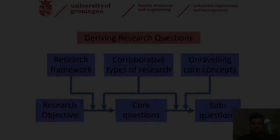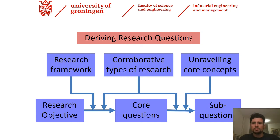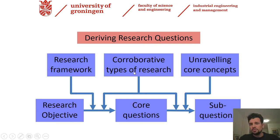This is where we are now: deriving research questions. If we make use of the research framework — this schematic representation of the full research plan — then we can jump from the objective to the core question and come back in an iterative process. The elaboration of sub-questions will depend on the knowledge that we want to gather, the so-called core concepts, and also the types of research. This is linked totally to the knowledge and the steps that we will achieve, and with this we can also achieve our research objective.